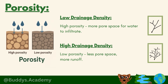Next is porosity. For low drainage density you need high porosity — more pore space for water to infiltrate. Porosity means how much pore space or gaps there are in rock or soil for water to enter. High porosity means a lot of pore space for water to enter the ground. For high drainage density you need low porosity — fewer gaps in soil means less space for water to enter, so more of it runs off the surface.